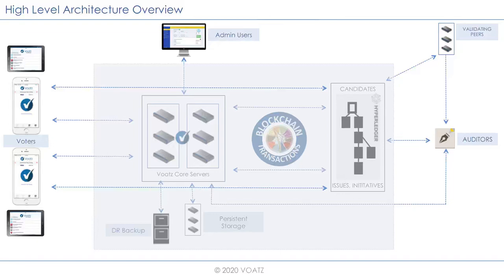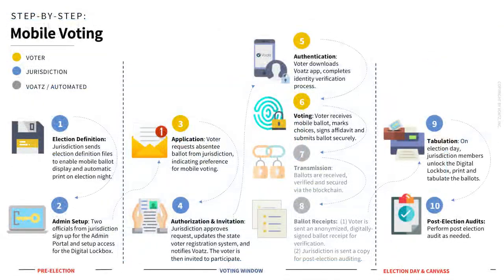Right now the system is being piloted only for absentee voters — specifically a small subset: military voters who are deployed, their families, and any U.S. citizen living overseas, commonly referred to as UOCAVA voters. If you're in that eligible group and your jurisdiction is participating in a pilot, you sign up as an absentee voter, submit a form to your county clerk, they do some vetting, and if eligible, they pre-provision you on the system.